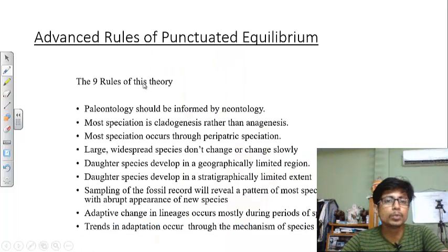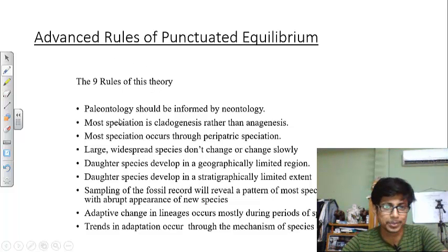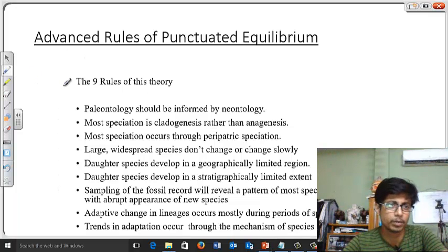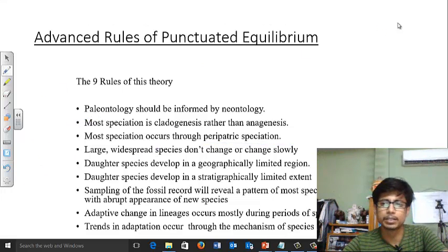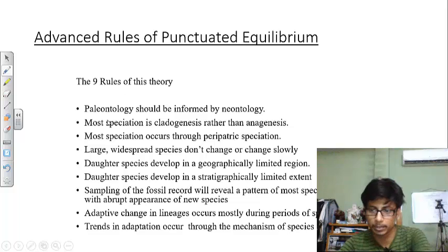These are the rules for the punctuated equilibrium theory. The advanced rules say that paleontology should be informed by neontology. Most speciation is cladogenesis rather than anagenesis. That is, I talked before that it's kind of cladogenesis in nature, not anagenesis. Most speciation occurs through peripatric speciation mode and so on. There are multiple things out there. I'm not going to talk about each of them, but once you know the idea of punctuated equilibrium, you see where we are going with it.